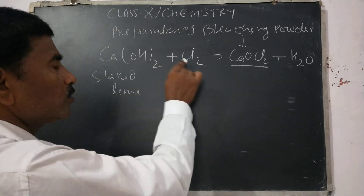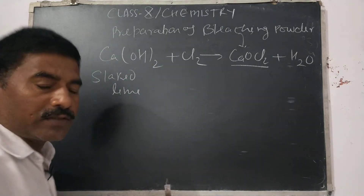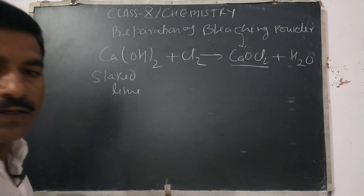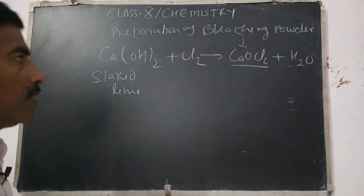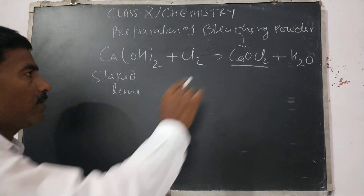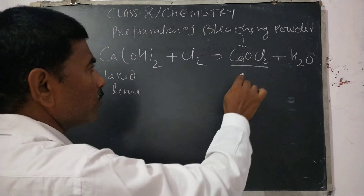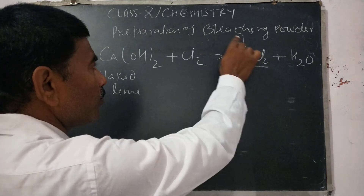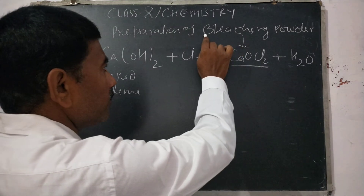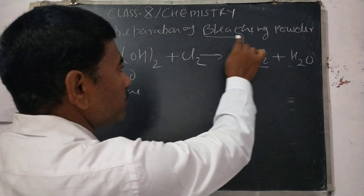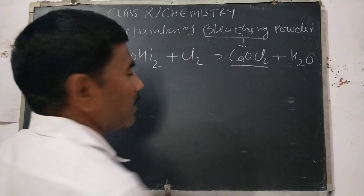Slaked lime and chlorine gas are passed together. After passing chlorine gas, we get calcium oxy chloride, which is commonly known as bleaching powder.